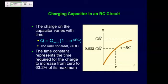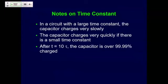The time constant is tau equals RC. R and C tell you how fast the exponential does what it does. If you graph Q versus time, it rises and levels off at some maximum. The time constant RC is the point where the capacitor reaches 63% of its maximum charge. After about 10 times RC, the capacitor is about 99.99% charged. Multiplying R times C gives units of seconds, so that's how long it takes to essentially fully charge the capacitor.